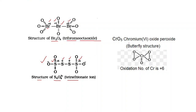Now let's see more examples where the average oxidation number differs from the structure-based value. Consider CrO₅ (chromium oxide peroxide), which has a butterfly structure. If we calculate the oxidation number of chromium using standard rules: let it be x, plus 5 oxygen atoms each at −2, equals 0. This gives x = +10, which is impossible for chromium.